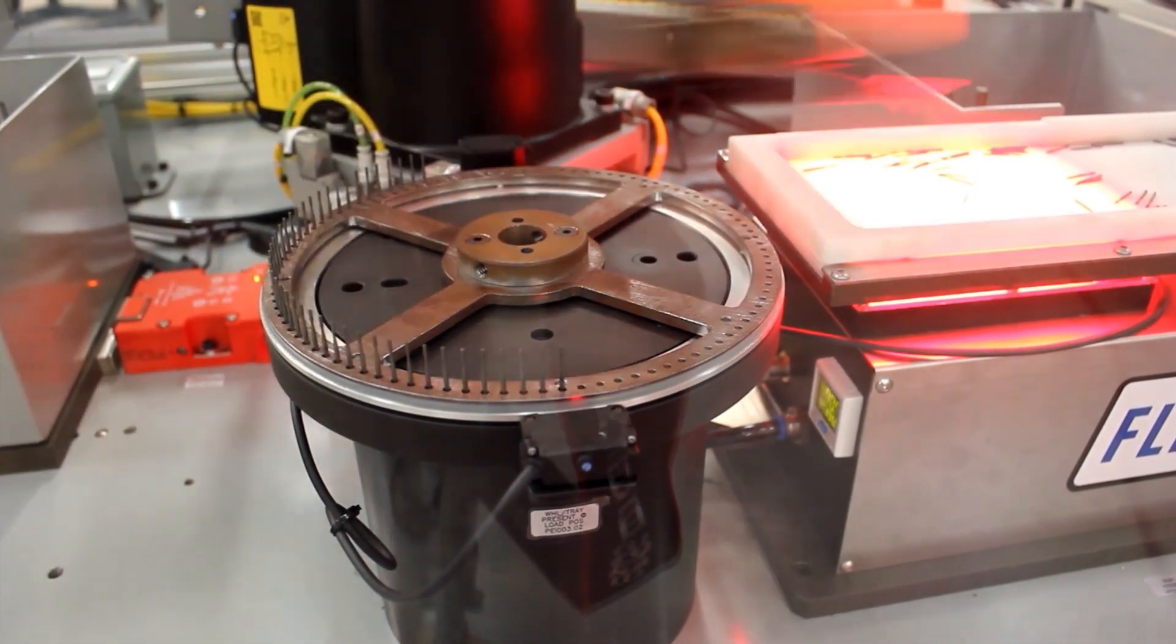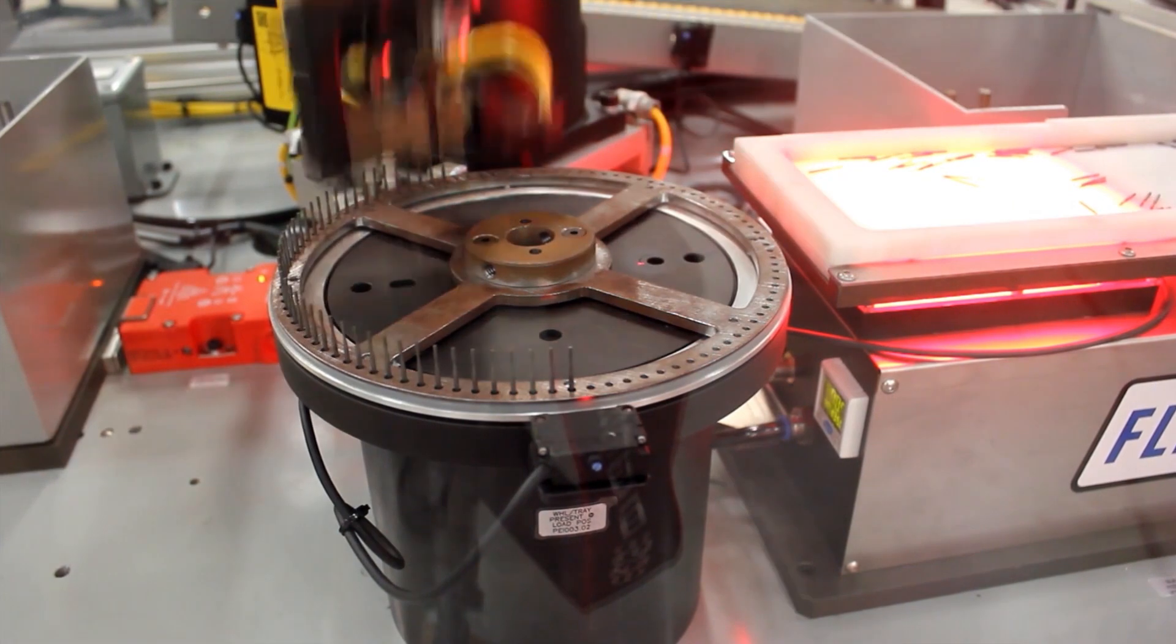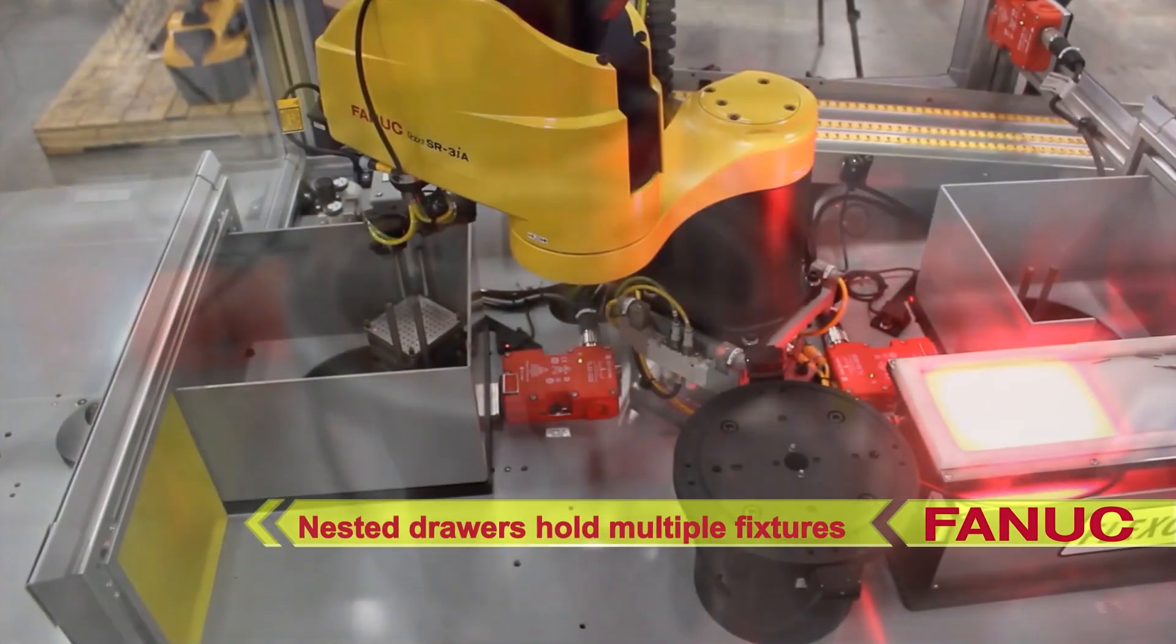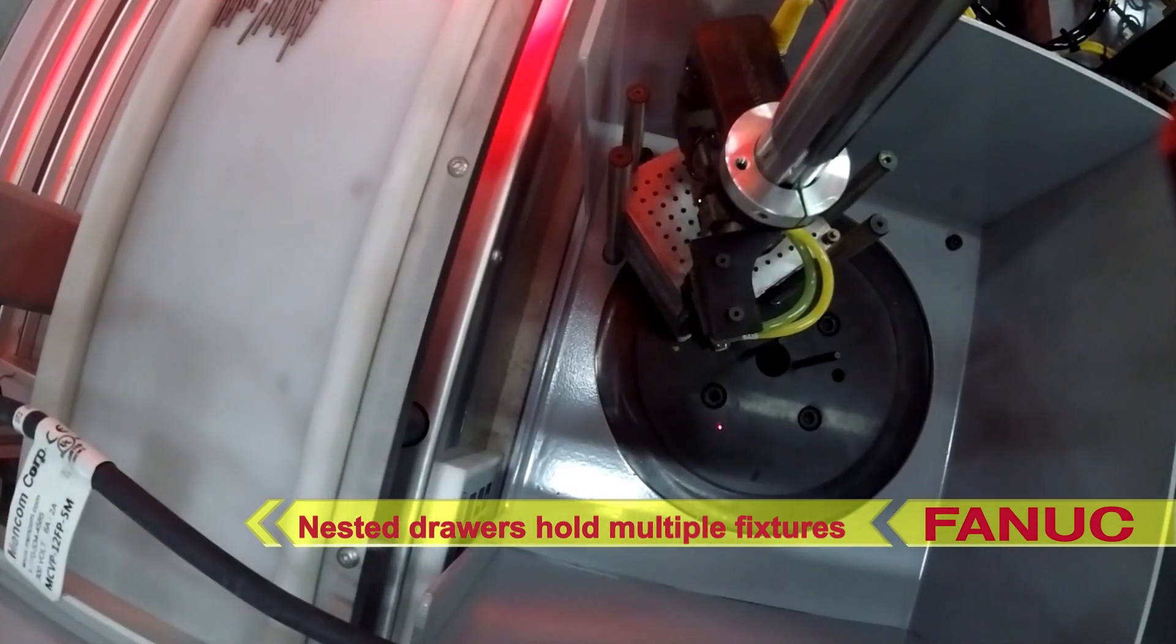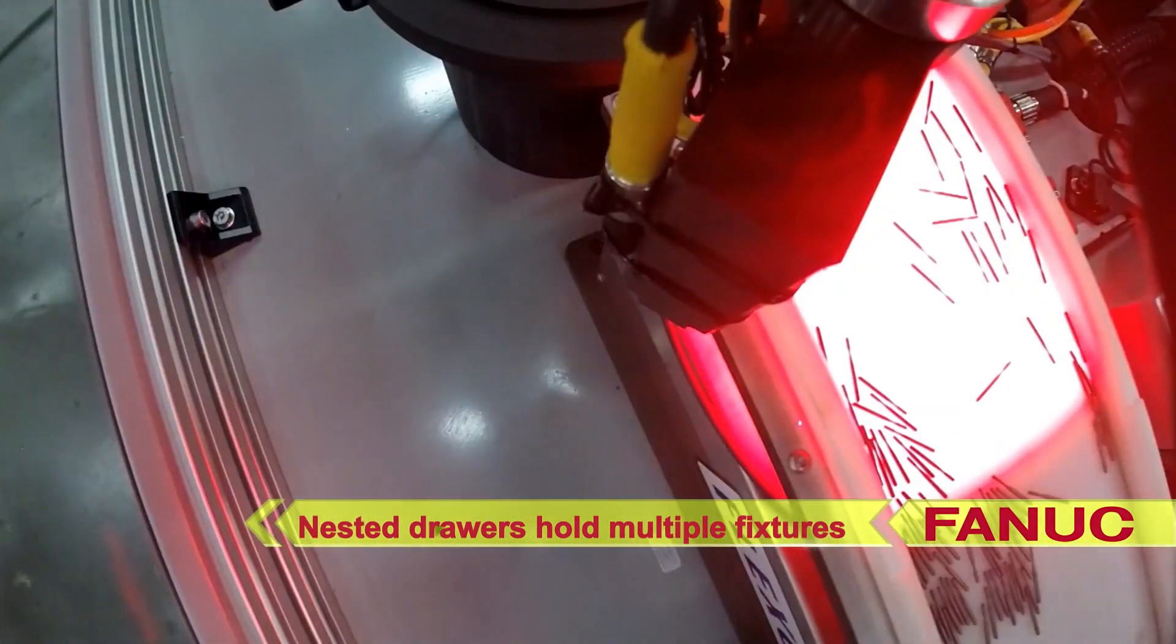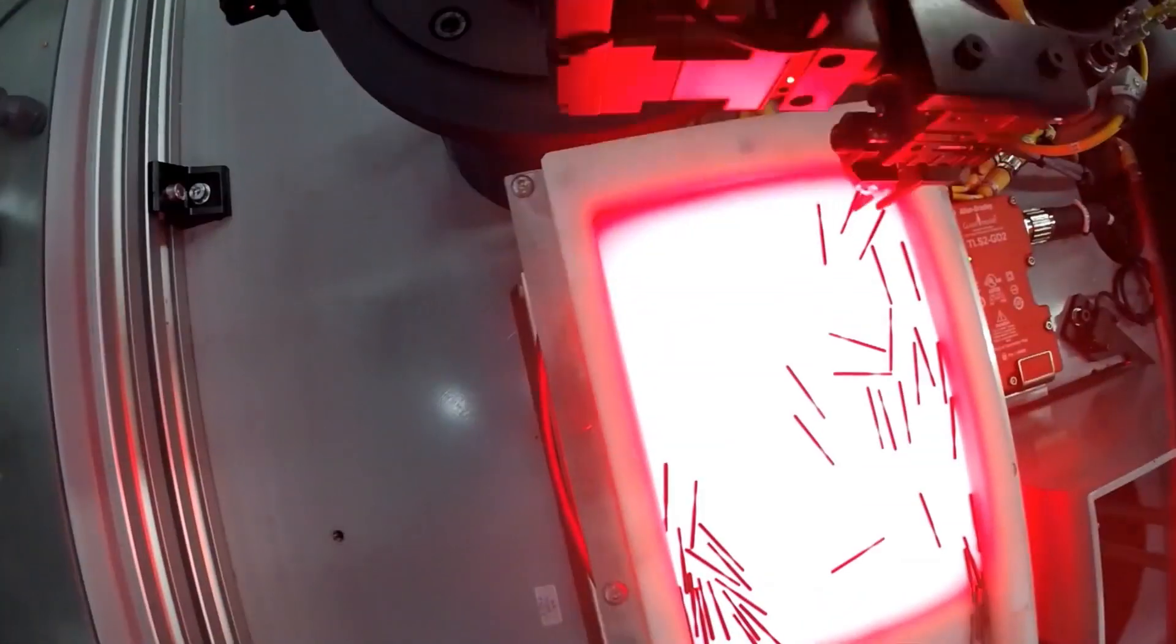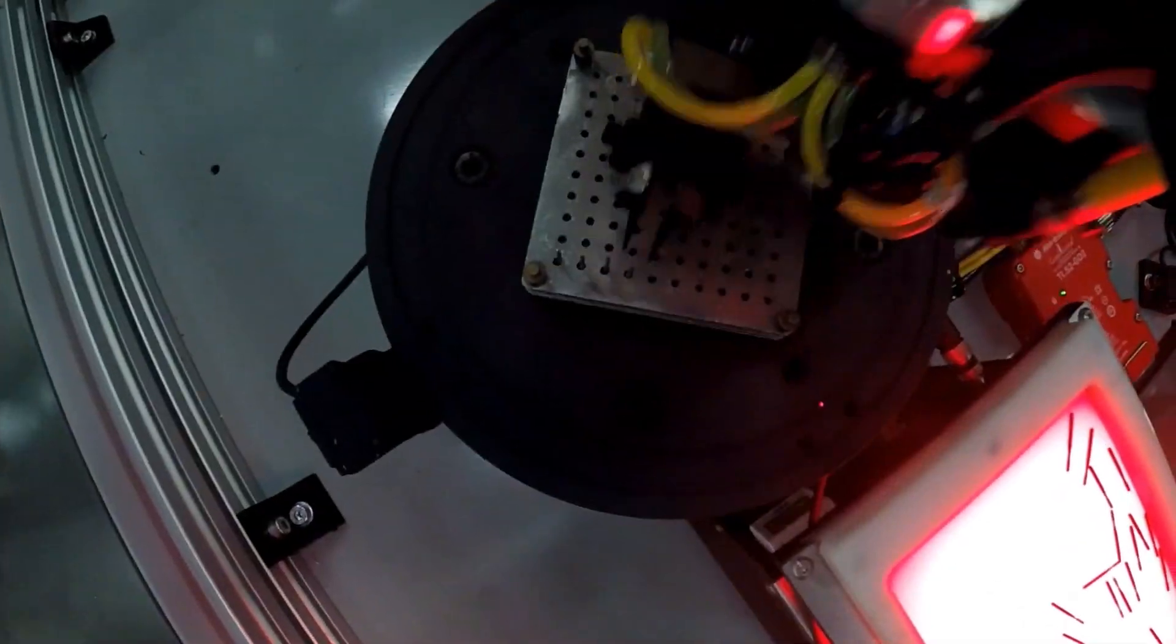The intelligent vision system and nested fixture drawers allow for on-the-fly loading of mixed parts to various fixture models. A variety of parts can be fed into the system and only the proper parts are loaded based on the fixture's model.